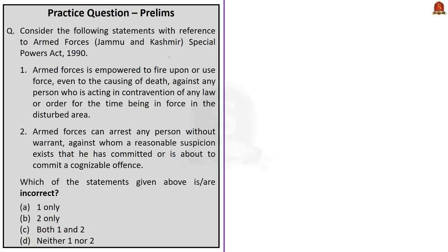This question is about the Armed Forces Jammu and Kashmir Special Powers Act of 1990. It is a two-statement question asking which statements are incorrect. Statement 1 says armed forces are empowered to fire upon or use force even to the causing of death against any person acting in contravention of any law or order in a disturbed area. Statement 2 says armed forces can arrest any person without warrant against whom reasonable suspicion exists that they have committed or are about to commit a cognisable offence. Both statements are correct. Hence, the correct answer is option D, neither 1 nor 2, since you need to choose the incorrect statements.